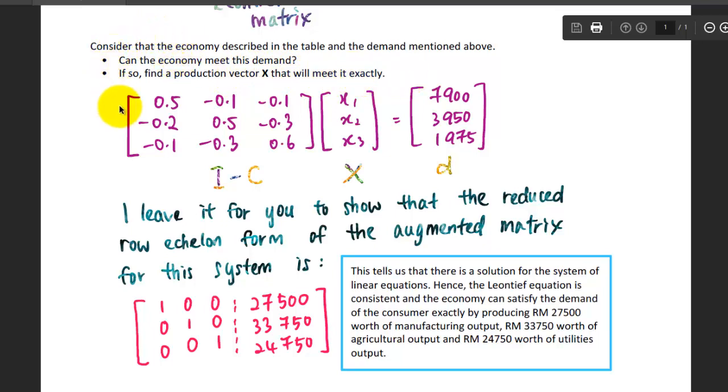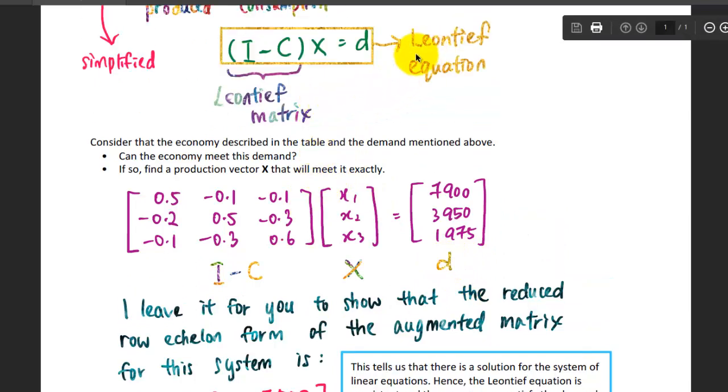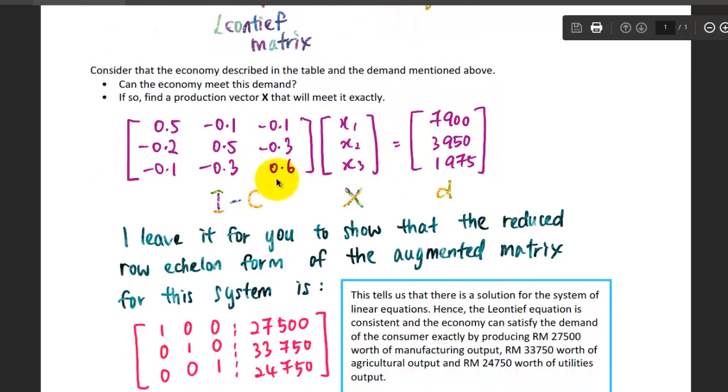Now we know that we have the consumption matrix, the identity matrix, and the demand matrix. We're going to put them into the Leontief equation here. This is the final form of the substitutions. This exactly looks like your system of linear equations where you need to find out the unknowns. The unknowns will be X1, X2, and X3 here.